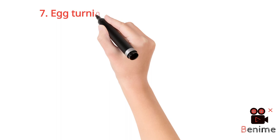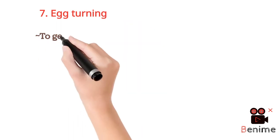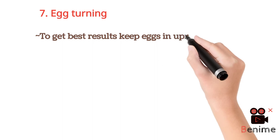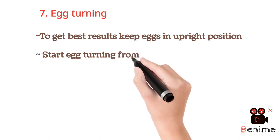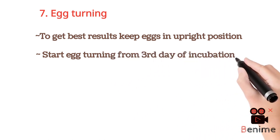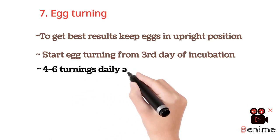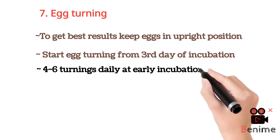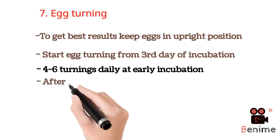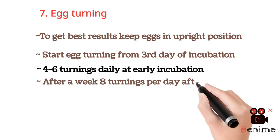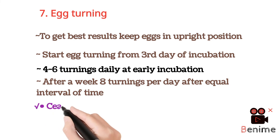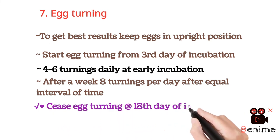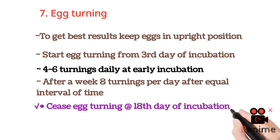The seventh factor is egg turning. To get the best results, keep eggs in upright position and start egg turning from the third day of incubation. In early stages, 4 to 6 turnings daily are recommended. After a week, 8 turnings per day at equal intervals gives the best results for hatchability. Cease egg turning at the 18th day of incubation; eggs in the setter are not to be turned.